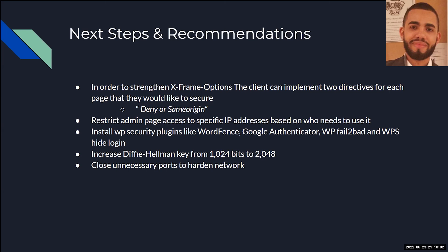There's also WP Fail2Ban, which helps protect against brute force attacks and tracks successful and failed user login attempts. There's also WPS Hide Login, which allows you to hide the login page from malicious attackers. For the Diffie-Hellman vulnerability, you should increase the key from 1024 bits to 2048 bits to make it more secure. And lastly, close unnecessary ports to harden your network, or have your firewall automatically open and close them as needed.